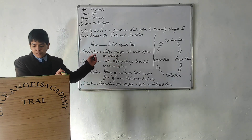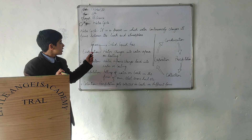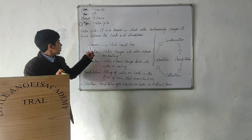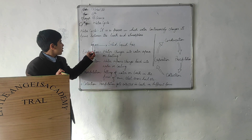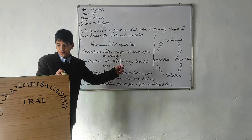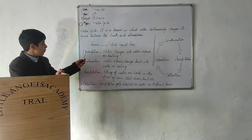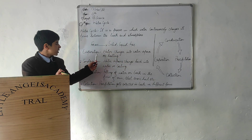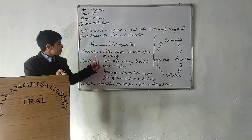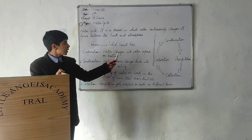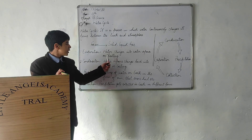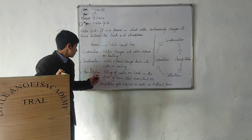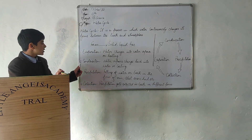By forms I mean water interconverts into states of solid, liquid, and gas. Water has four states. The first one is evaporation — it is a process when water changes into water vapor on heating and escapes into the atmosphere. The second one is condensation.